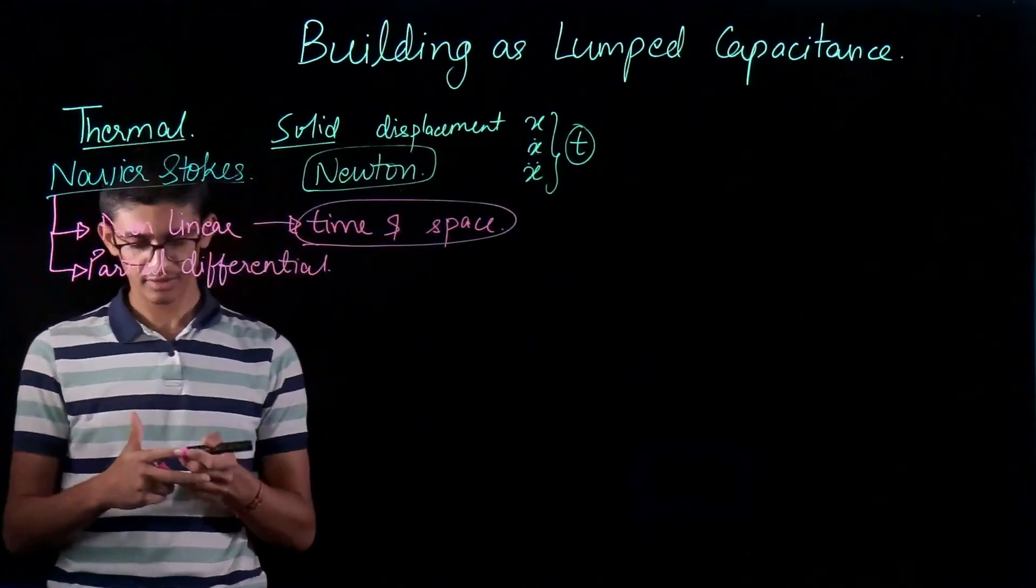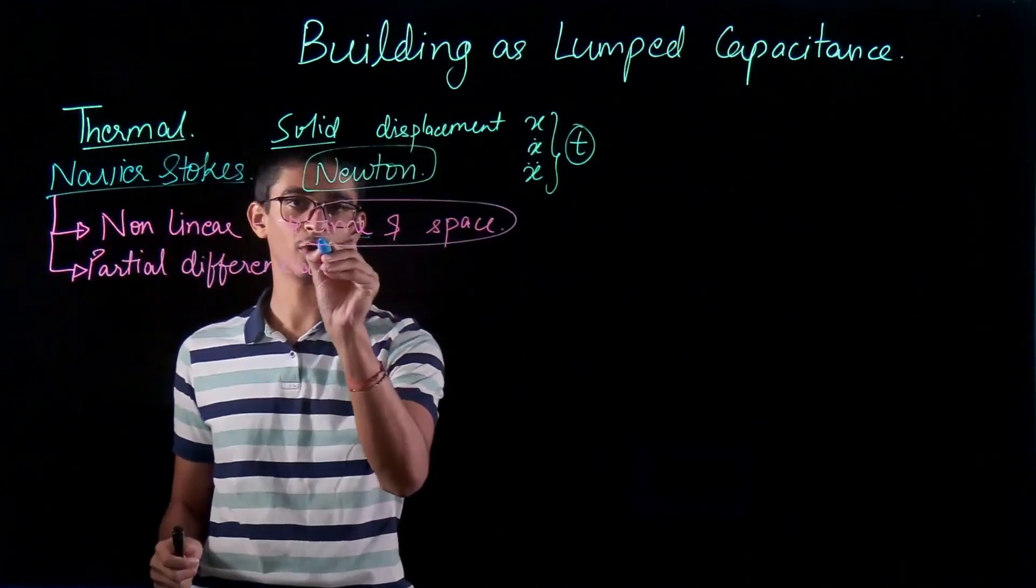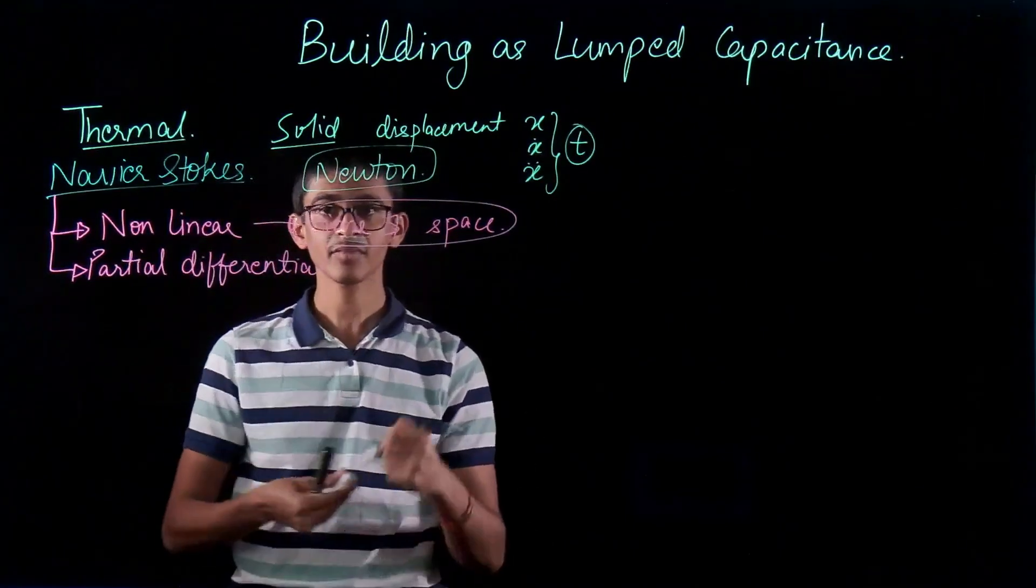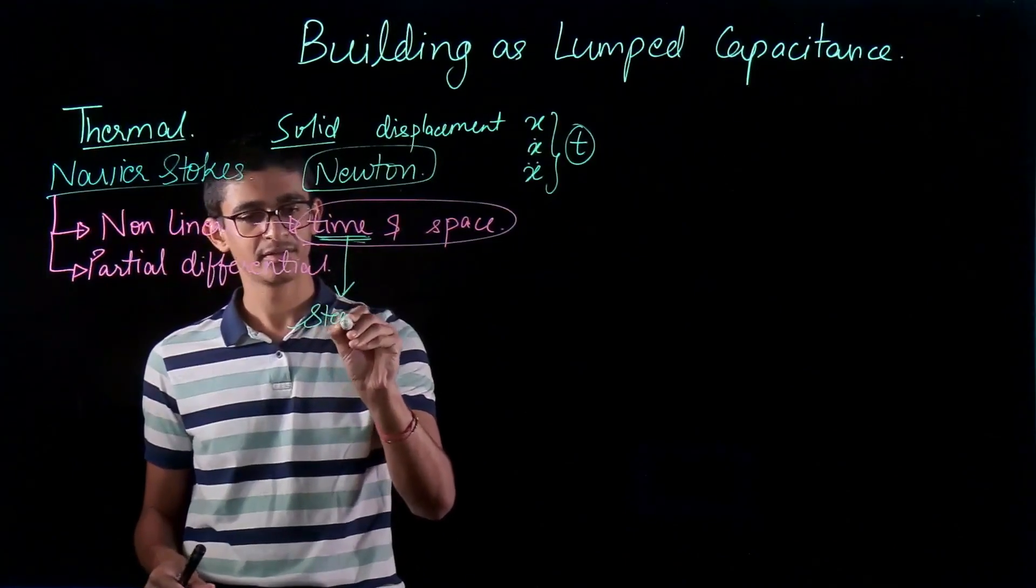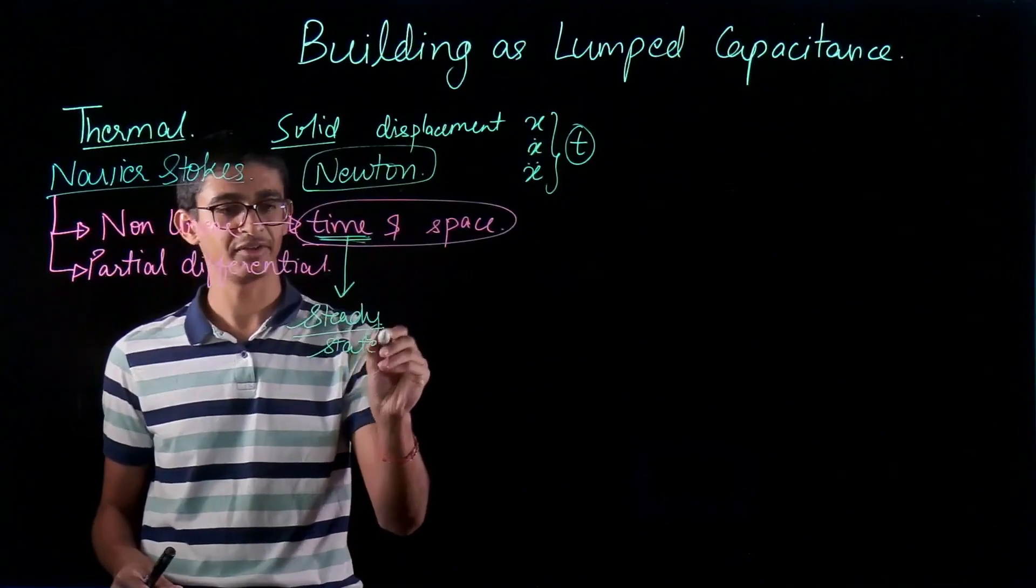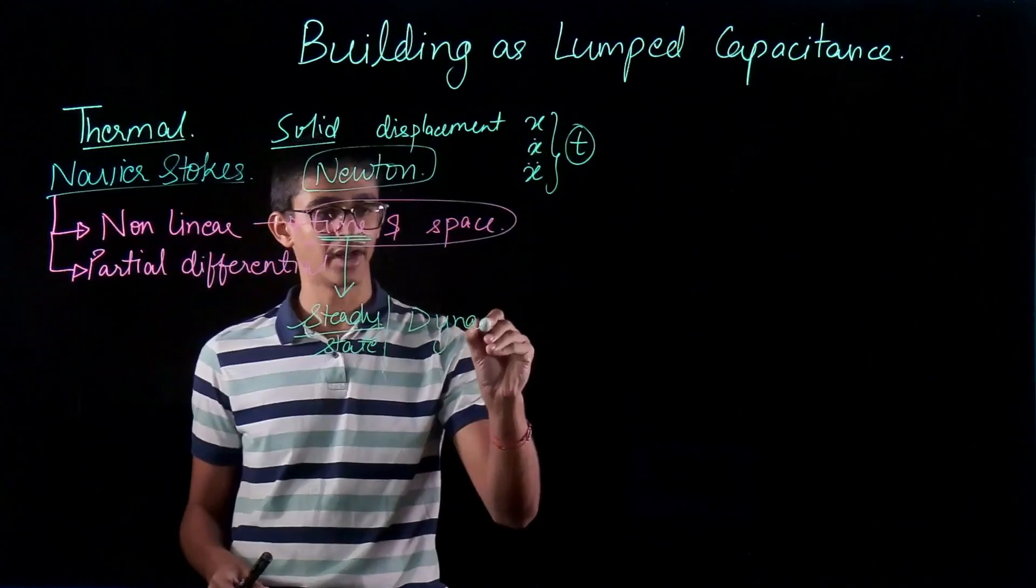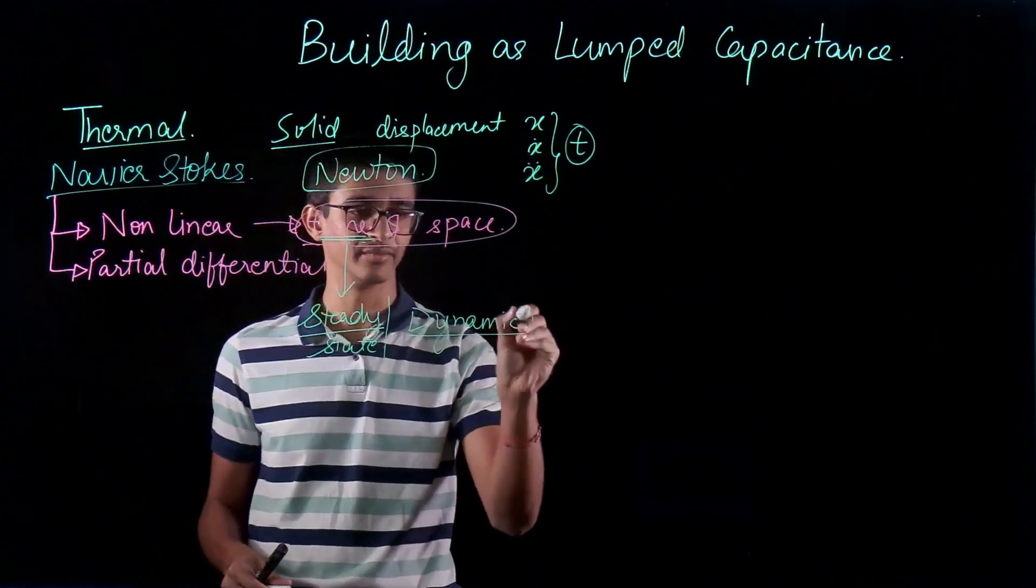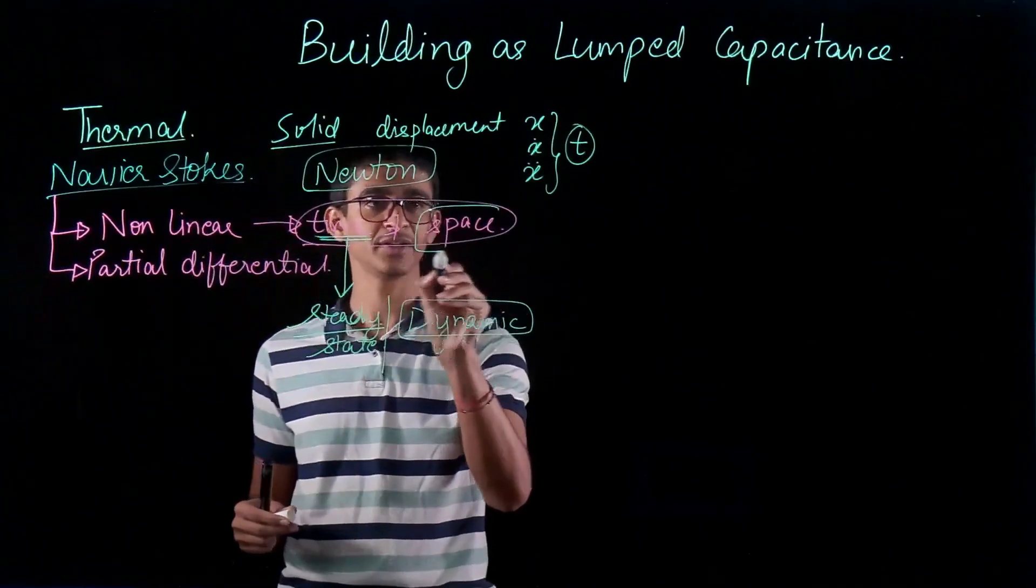So one of the simplifications could be we make a steady state assumption. So we can drop this time factor and dropping these time factors makes it steady state. But if we do not want to solve steady state, we still want the dynamic solution which changes with time. My variables are changing with time. Then we change the space coordinates.